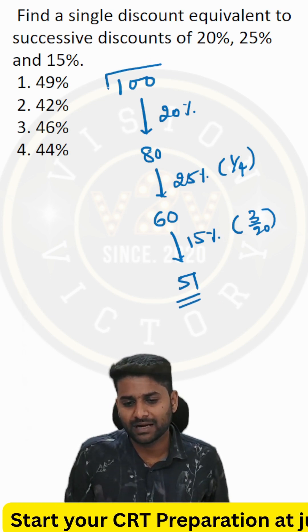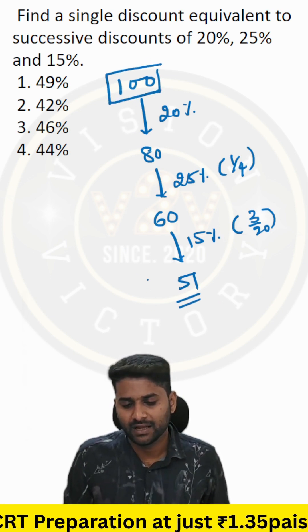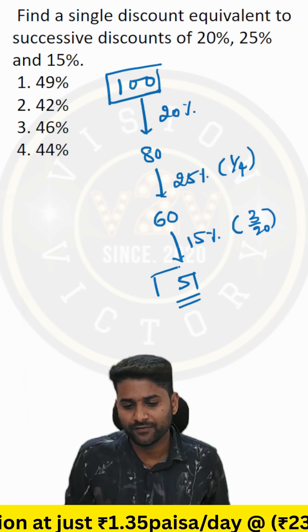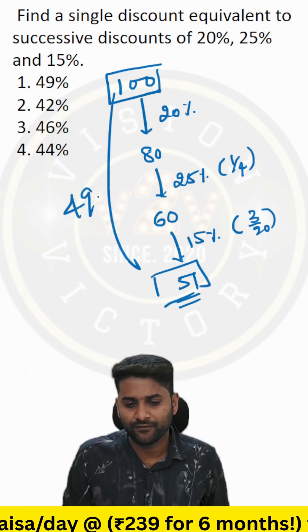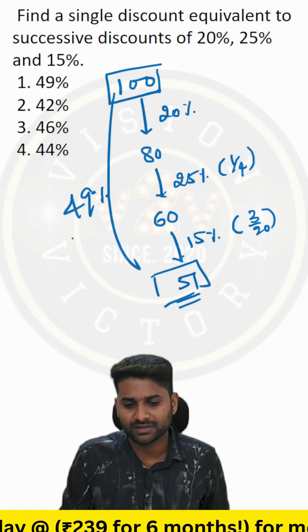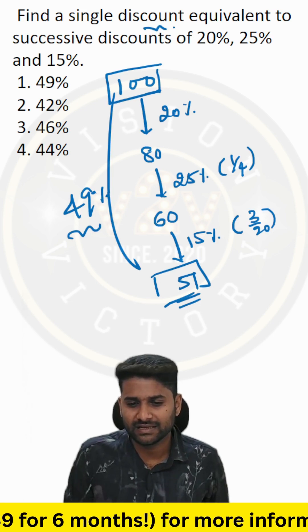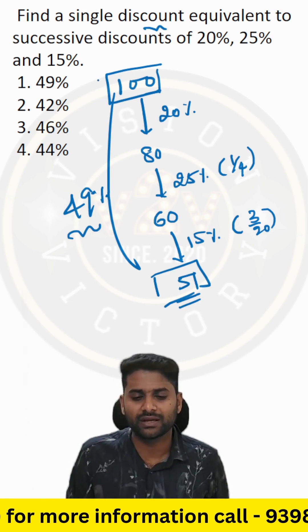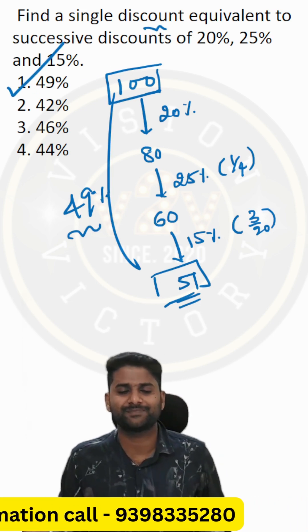The initial market price is 100, and now you are going to pay only 51. So how much discount did we get? 49%. So the single discount equivalent to the successive discounts is 49%. Thank you guys.